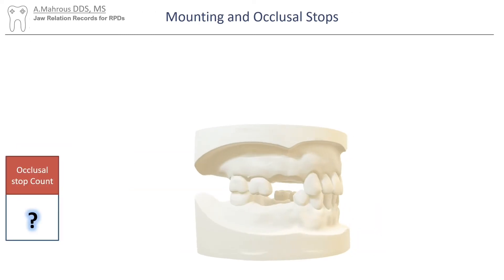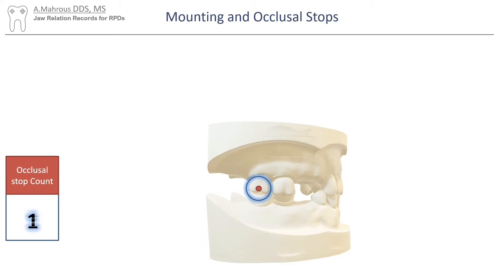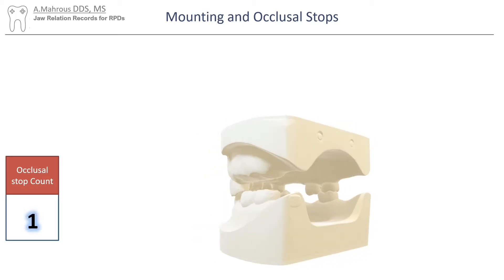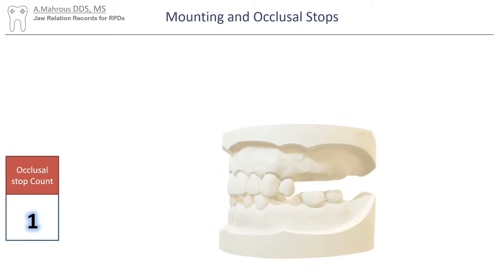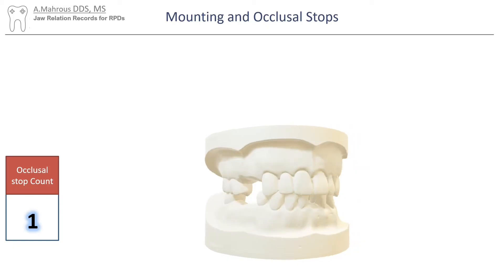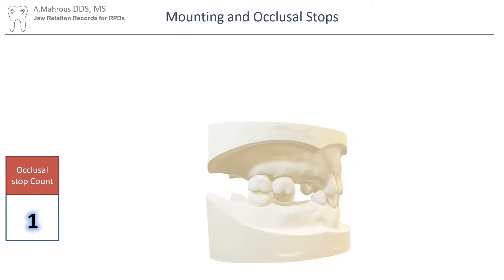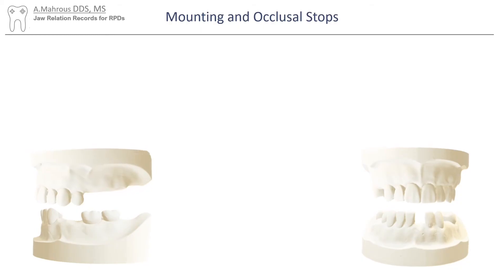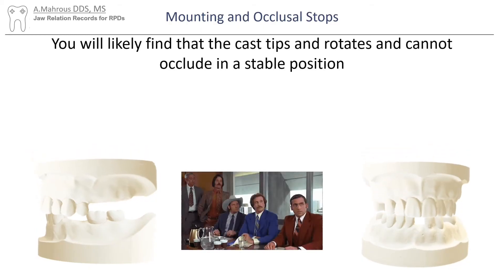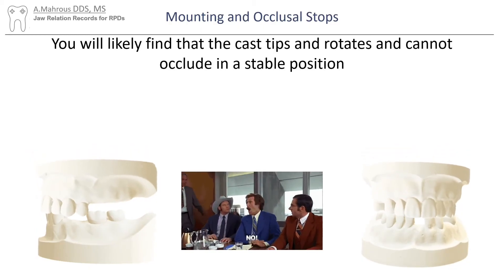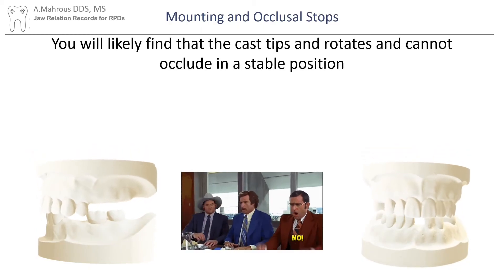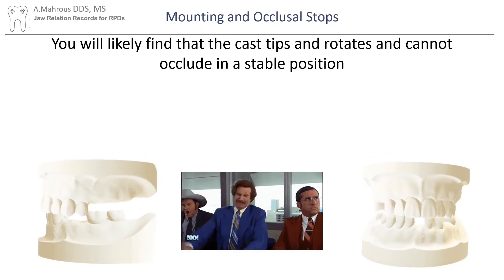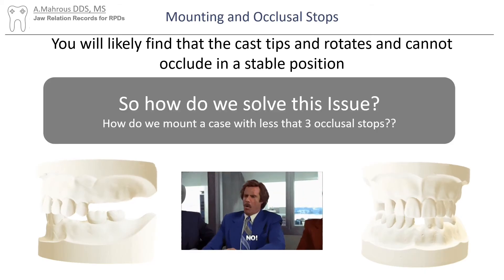Let's take this case for example. Here is one occlusal stop, and if we go around, we'll find that there aren't any more occlusal stops. If we try to bring those casts together by hand, we'll find that finding an accurate position is not possible, as these casts tip over the one occlusal contact that exists.